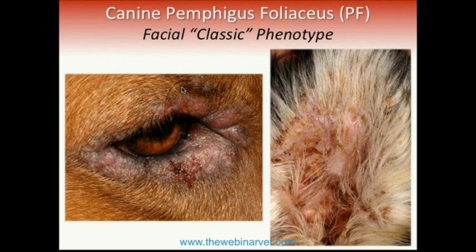Here is a close-up example of the eye lesions. You can see some pustules but mostly erosions — pinpoint erosions because of the fragile nature of the lesions — and the same on the pinna.